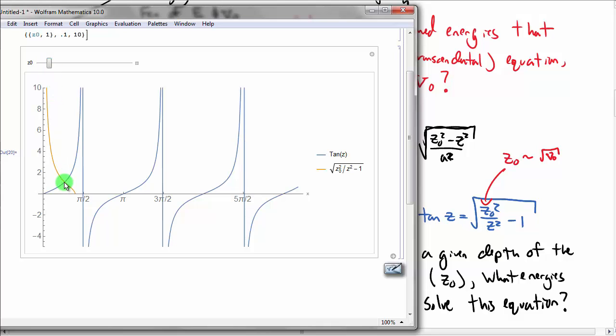As I increase the depth of the well, I gain another bound state. The solutions are where the two curves intersect. I keep increasing Z naught and now have three bound states. I can keep going and gain even more bound states. I can also decrease the depth to make a shallow well, but I always end up with one bound state, regardless of how shallow it is, as long as it's not zero.